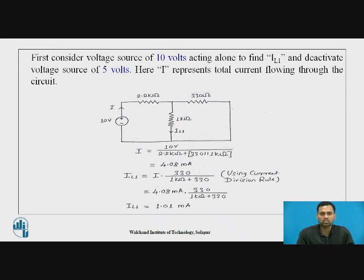Next, we find current IL1 through the 1 kΩ resistor using the current division rule. The formula is IL1 = I × 330 Ω / (1 kΩ + 330 Ω). So IL1 equals 1.01 mA — the current through the 1 kΩ resistor when analyzing the effect of the 10V voltage source.